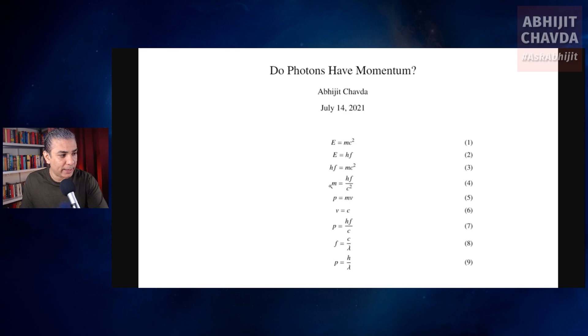You rearrange that, you get m equals hf by c squared. So the photon has a relativistic mass of sorts, an equivalent mass, which is given by h, Planck constant, multiplied by the frequency of the photon, divided by the square of the speed of light.